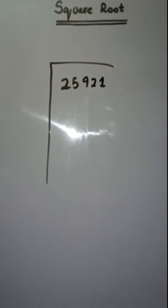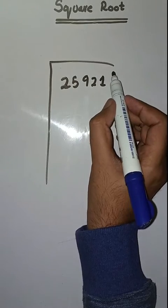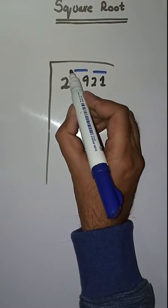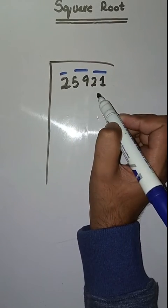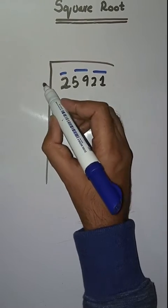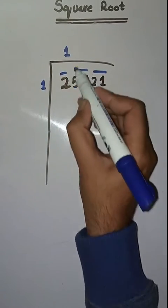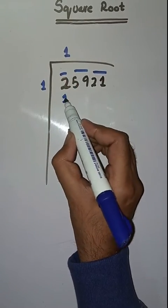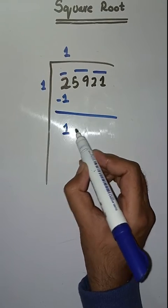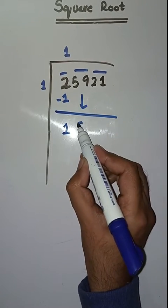We make pairs from right to left like this: 21, 59, and 2. So what will we do first — we have to solve 2. We take the number 1: 1 times 1 is 1, minus 1, we have remainder 1.